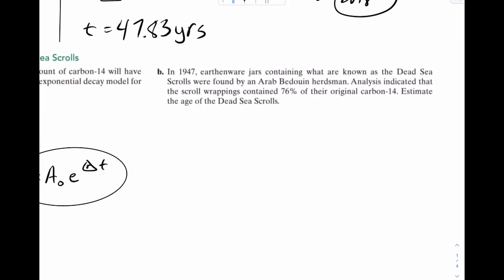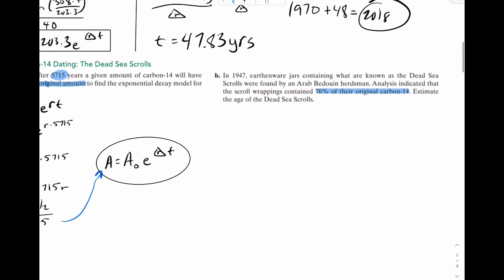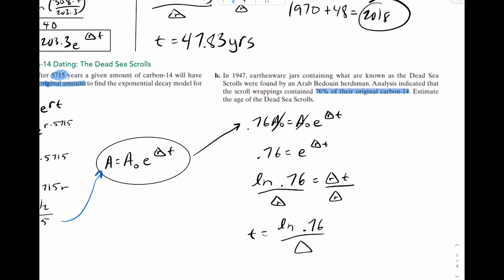So now we go to B. This is where we actually use the formula. So it gives you a year, 1947. It says the analysis indicated that the scroll wrappings contained 76% of their original carbon-14. Estimate the age of the scrolls. So what we're going to do is actually use this rate we already had. So grab that formula. We found that there was 76% of the original, so 0.76 of the original. That's equal to the original times E to the triangle RT. Get rid of your A's. So 0.76 equals E to the triangle RT. And then we proceed like regular. Natural log of 0.76 equals triangle RT. Divide by the triangle. So T must be natural log of 0.76 divided by R.